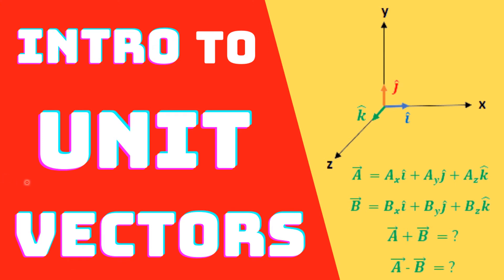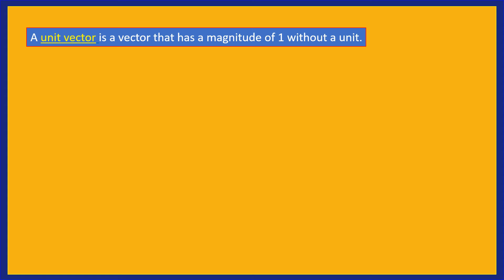In this video I'm going to discuss unit vectors. A unit vector is a vector that has a magnitude of 1 without a unit, and its only purpose is just to point — that is, it gives direction to a given vector.